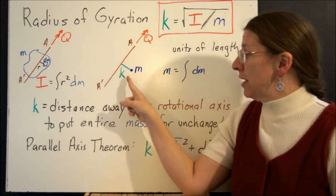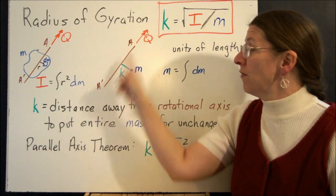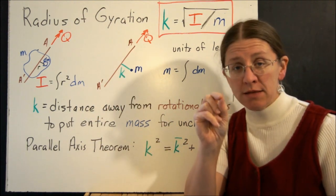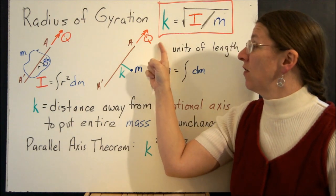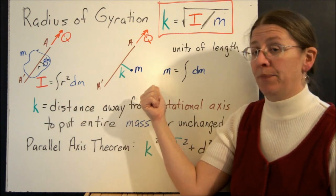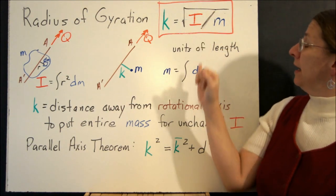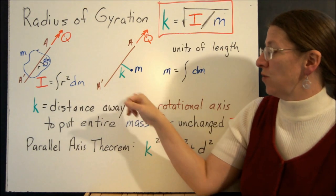The radius of gyration is the distance away from this axis that you'd have to put a point mass equal to the total mass of your object, so that that torque produces the same I. So m is the integral of dm, and this I will be the same for both of these situations.